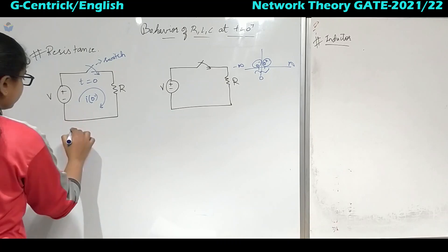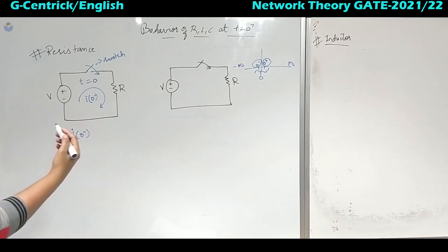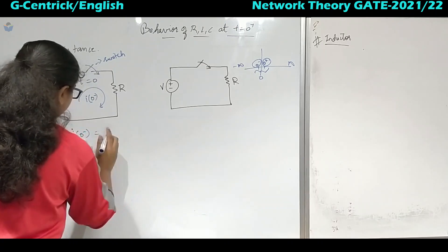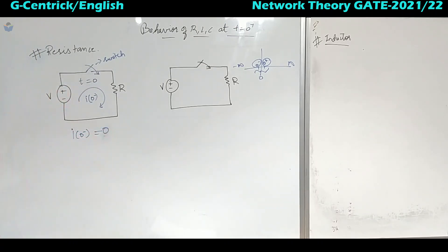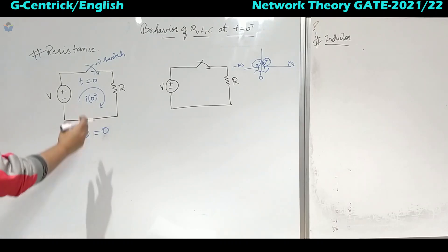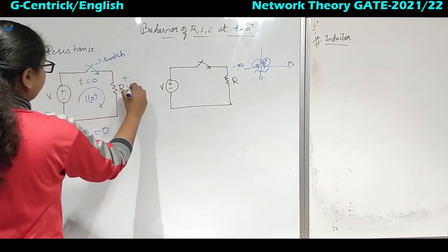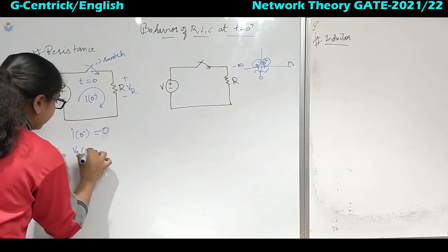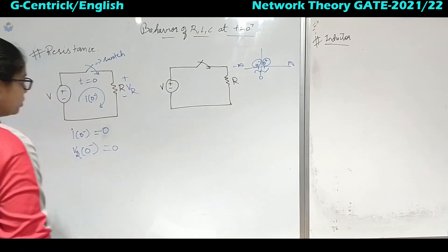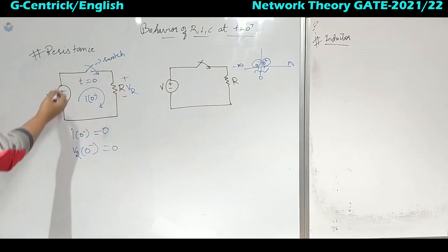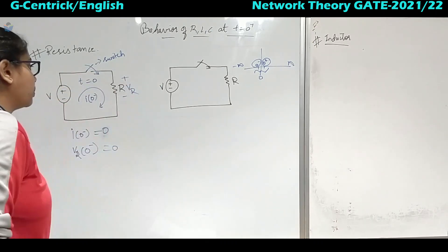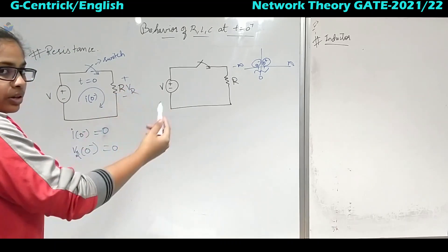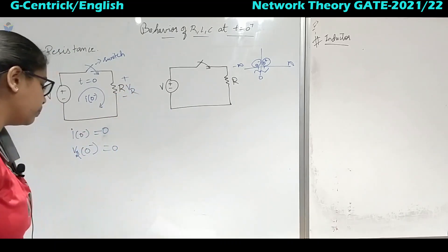Before closing the switch the circuit will be open, so I(0-) will be equal to 0. When I(0-) is 0, the voltage across the resistor Vr at 0 minus will also be equal to 0, because Vr = I × R, and 0 × R = 0.